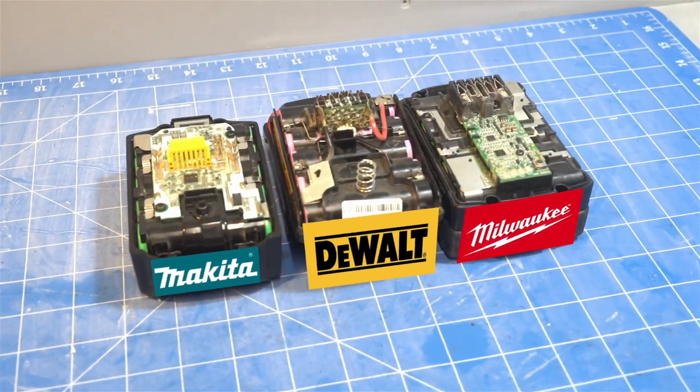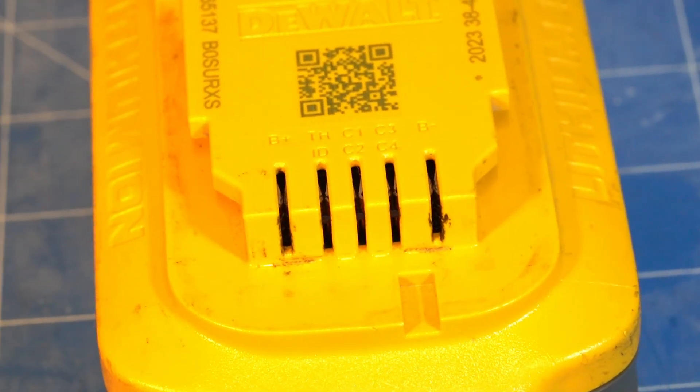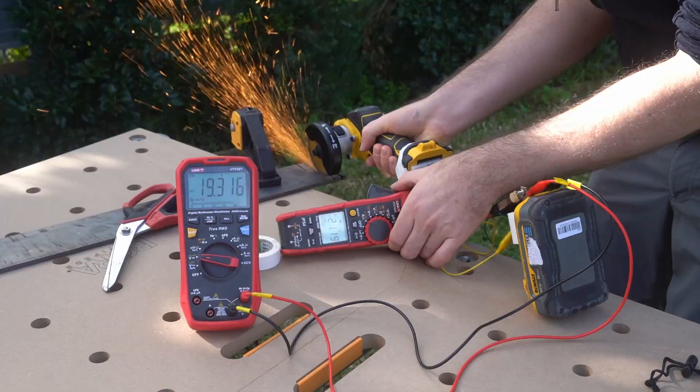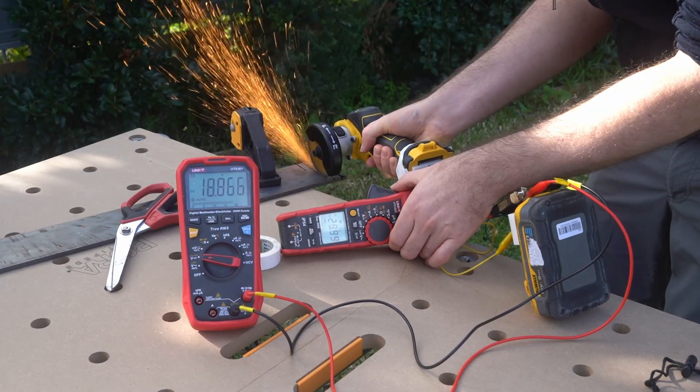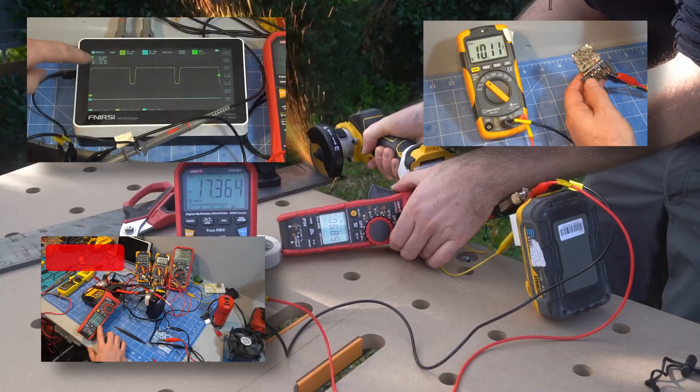DeWalt batteries are very simple compared to Milwaukee and Makita. Instead of microcontrollers they just use analog pins that let the tool and charger measure low voltage or over temp. But sometimes simplicity can be better, so let's find out how DeWalt checks for low voltage and over temp, what charging method they use and how they balance their batteries.